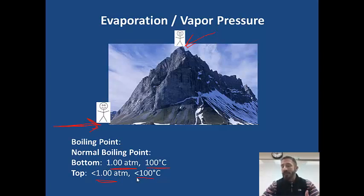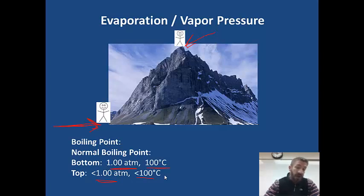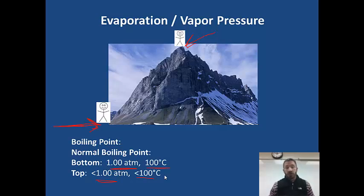What implication does this have for cooking? If you cook something at the top of a mountain, it will take longer because you're cooking at a lower temperature. For example, water might boil at 92°C instead of 100°C, so you're cooking at a lower temperature and it takes longer.